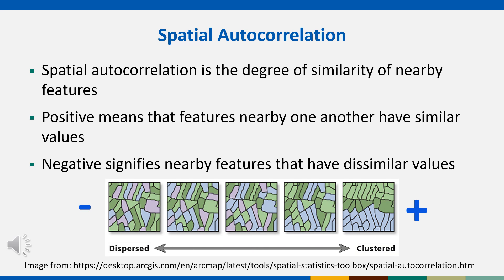An autocorrelation of minus one would mean all units are perfectly distributed with no similar features near each other, like shown in the left side of the image, where none of the colors are touching.